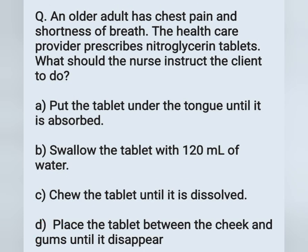Next question: an older adult has chest pain and shortness of breath. The health care provider prescribes nitroglycerin tablets. What should the nurse instruct the client to do? A) put the tablet under the tongue until absorbed, B) swallow the tablet with 120 ml of water, C) chew the tablet until dissolved, D) place the tablet between the cheek and gum until it disappears.